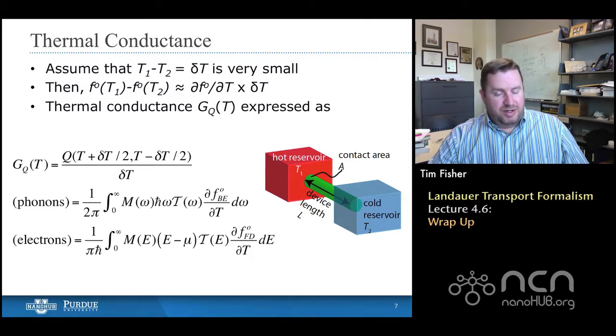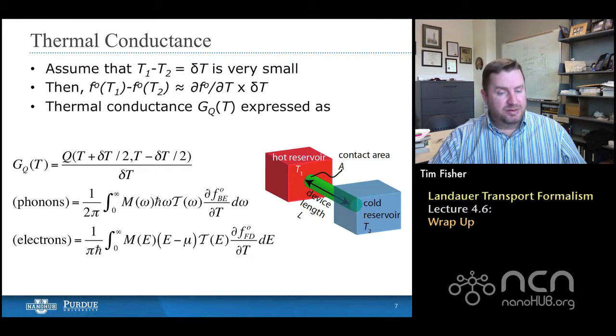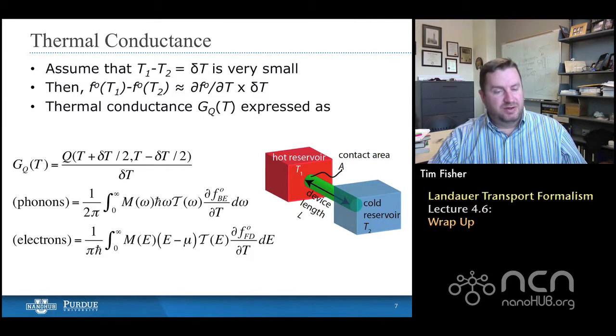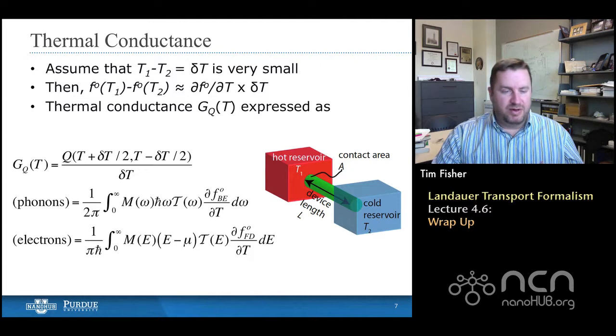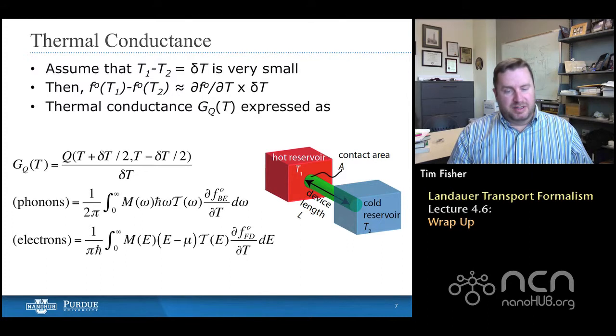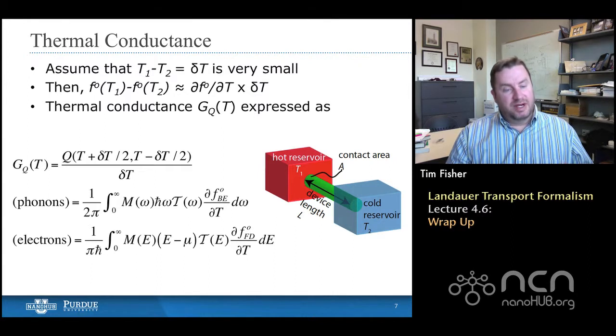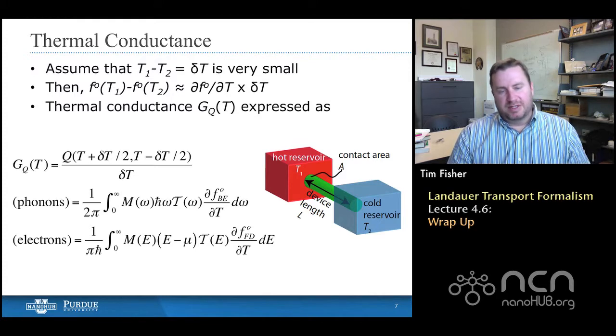When we do all of these things and a little bit of algebraic manipulation, we find that the thermal conductance can be expressed as the product of really four things, and then integrated over the frequency or energy space. The four things are the number of modes, the energy of the carrier, that's h bar omega for phonons, the transmission function, that's the script T, and then the derivative of the distribution function with respect to temperature. So you have those four terms, actually the product of those four terms is what we'll call the spectral conductance. We call it spectral because it depends on frequency or energy.